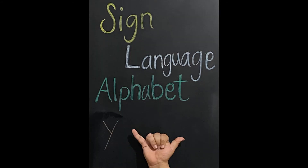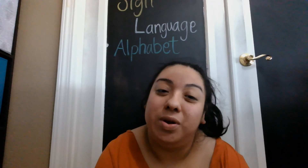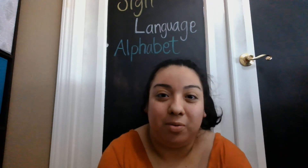Y is with our pinky out and our thumb out and the other ones curled in — kind of like a cowabunga sign. For Z, we use our index finger and we draw out the Z. And now we know the whole sign language alphabet.